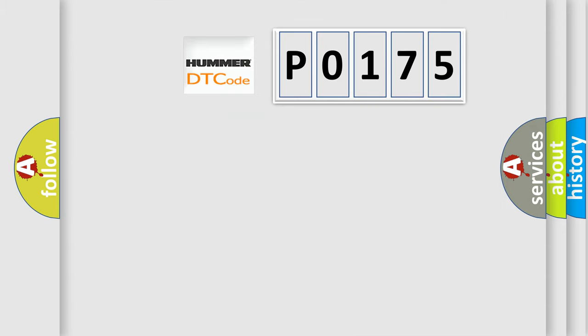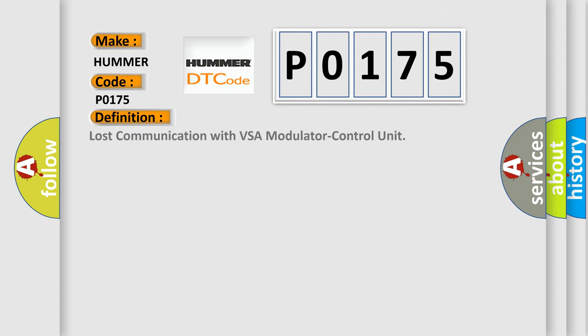So, what does the Diagnostic Trouble Code P0175 interpret specifically for PAMA car manufacturers? The basic definition is: Lost communication with VSA modulator control unit. Here is a short description of this DTC code.